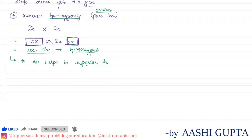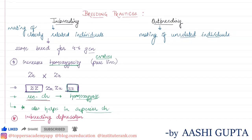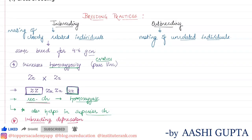Due to the increase in homozygosity, something called inbreeding depression occurs. Inbreeding causes an increase in pure lines, which in turn can cause inbreeding depression — wherein disease-causing recessive characters can also be expressed. This is called inbreeding depression, which is caused by inbreeding.